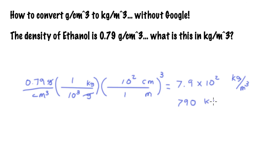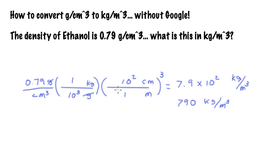So that's how you convert density in grams per cubic centimeter into kilograms per cubic meter. But really this is an example of how you can convert any set of units to any other set of units by stringing along factors in a way that doesn't involve a whole lot of thinking.